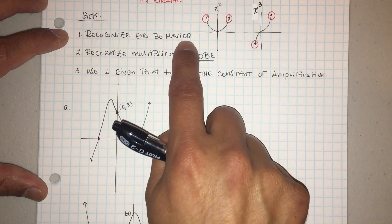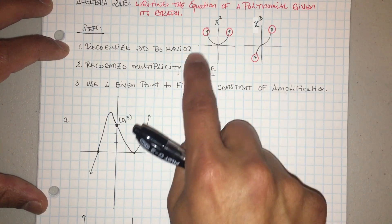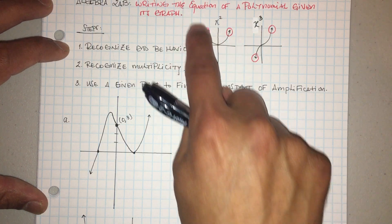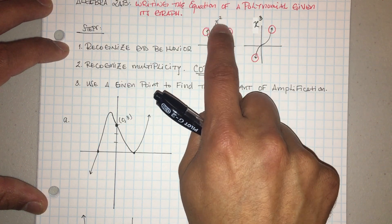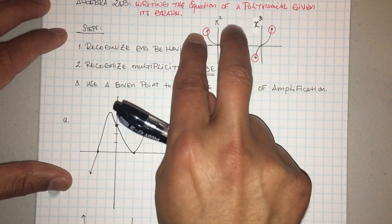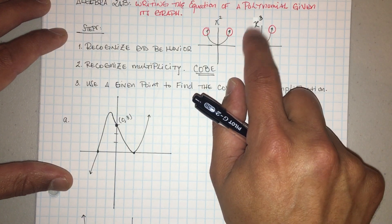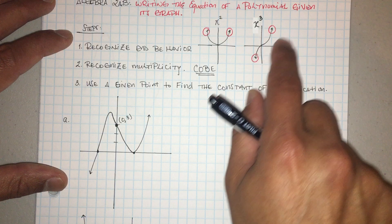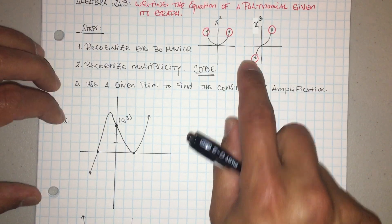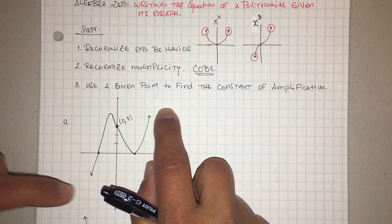The first thing you got to recognize is the end behavior. End behavior is basically just the corner points — you see how it goes up on both sides. Whenever the polynomial is even, like two, four, six, eight, they're both gonna go up. Same thing with the odd: one, three, five, seven goes up on the right, down on the left. So when you look at the first one, you see it goes up on the right and down on the left, so I know it's a cubic.